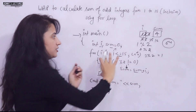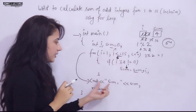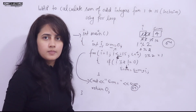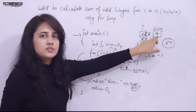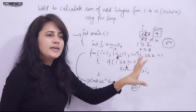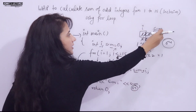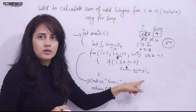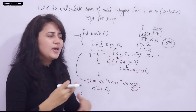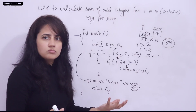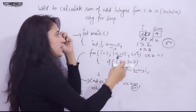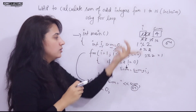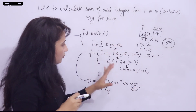i becomes 16. Condition 16 <= 15 is false — exit the for loop. We print sum, which is 64. This is why we initialized sum to 0: if it held a garbage value, garbage plus 1 would still be garbage, giving an unexpected result. Always initialize variables before using them.